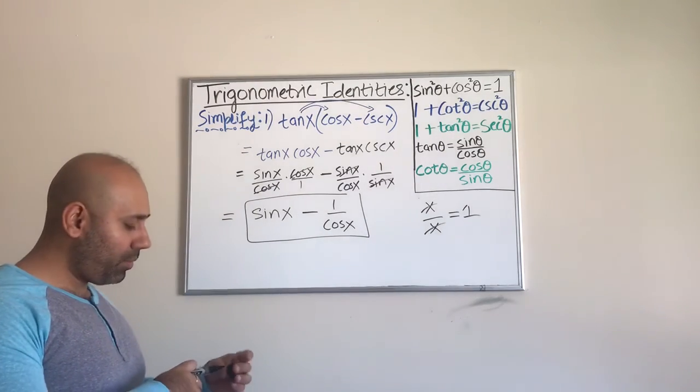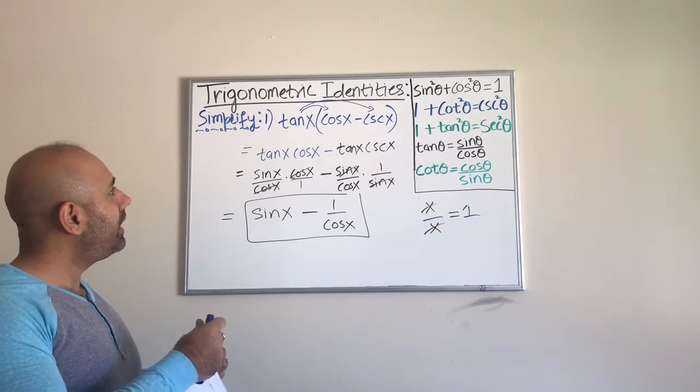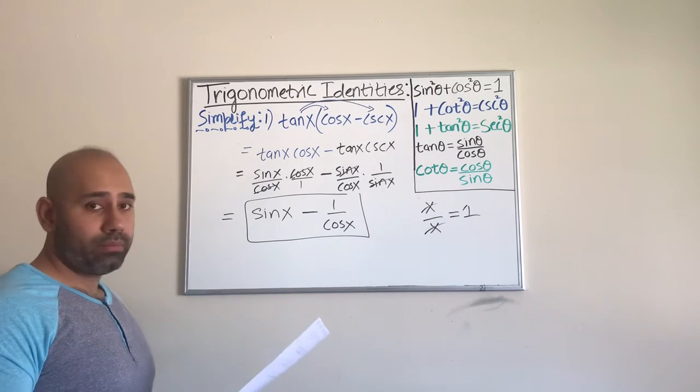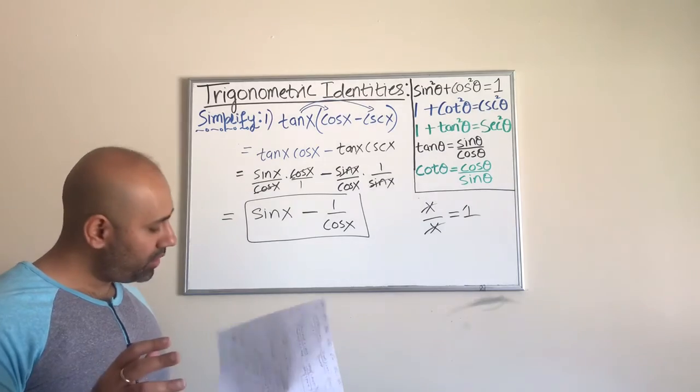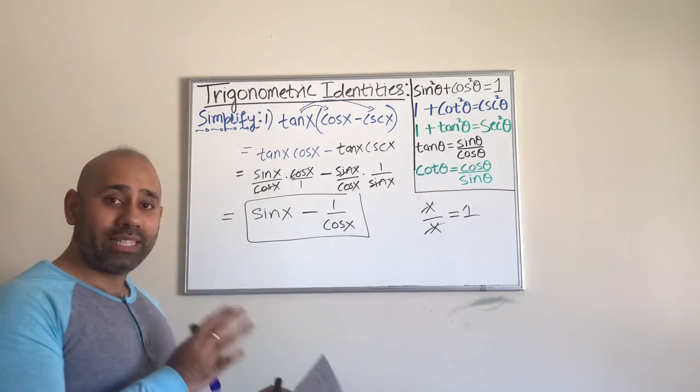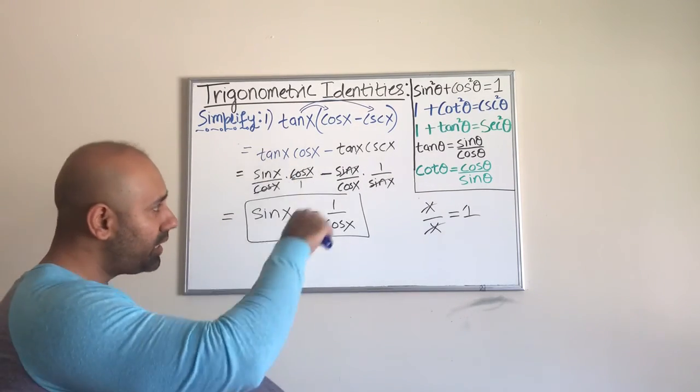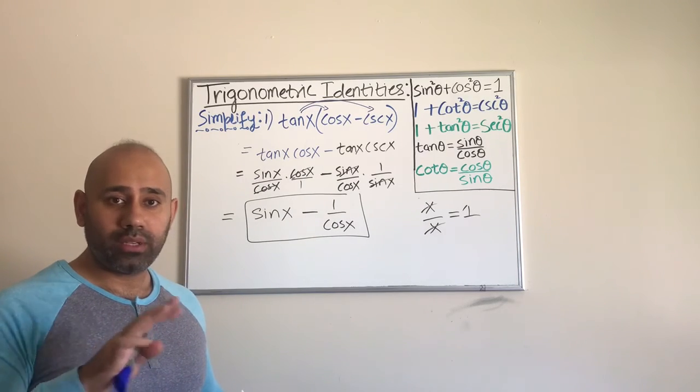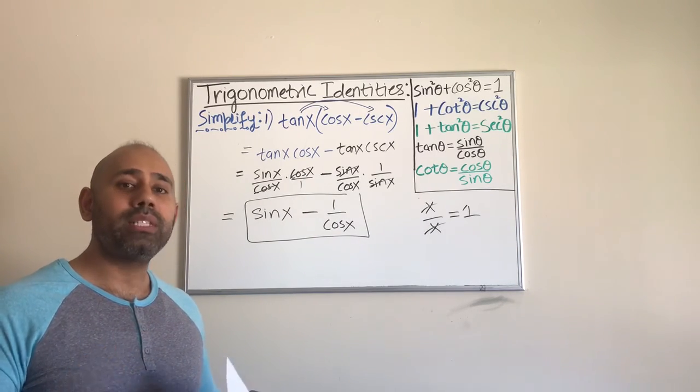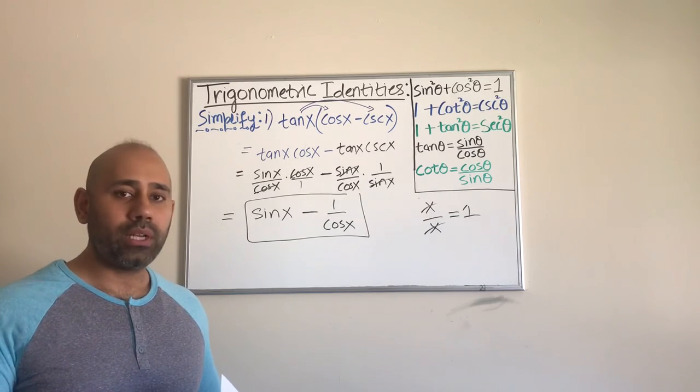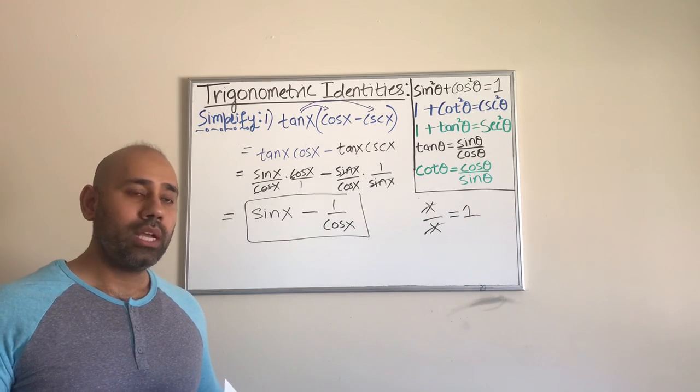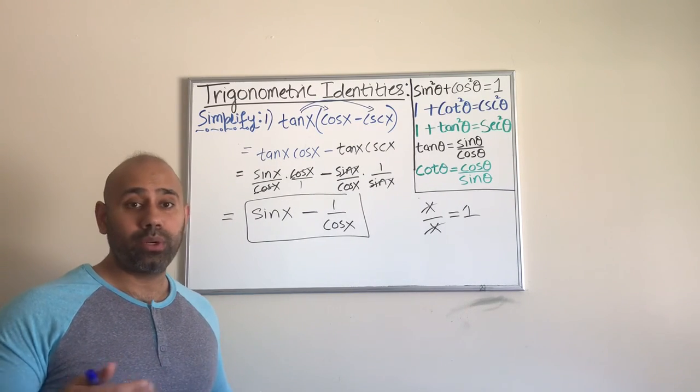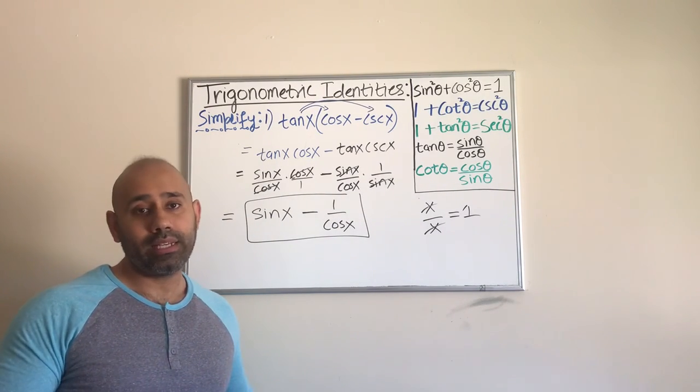That is example one. In the next video I'm going to try to do probably one more. I've chosen about seven examples in this section which involves these basic trig identities, and once we do these seven examples, then we'll go into the sum and difference and all those other types of identities. Just wait for my next video and I'll be doing a lot more of these types. Till then, take care.